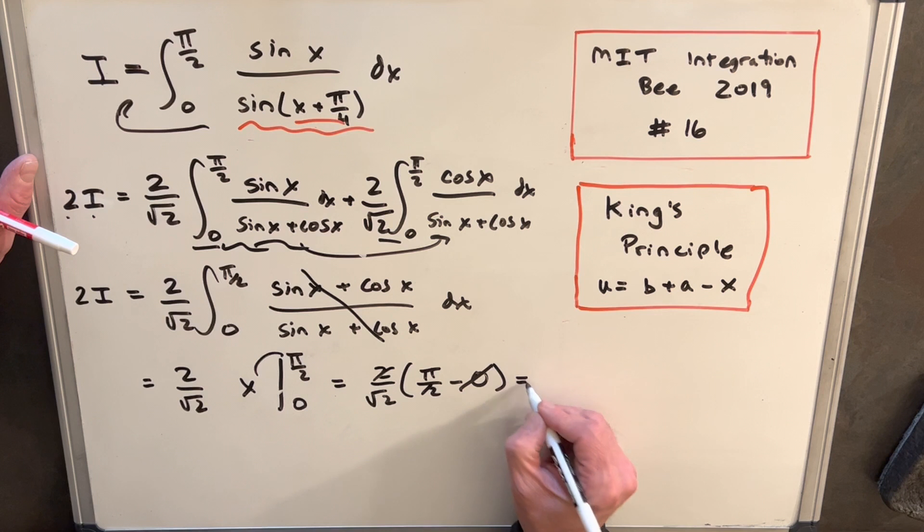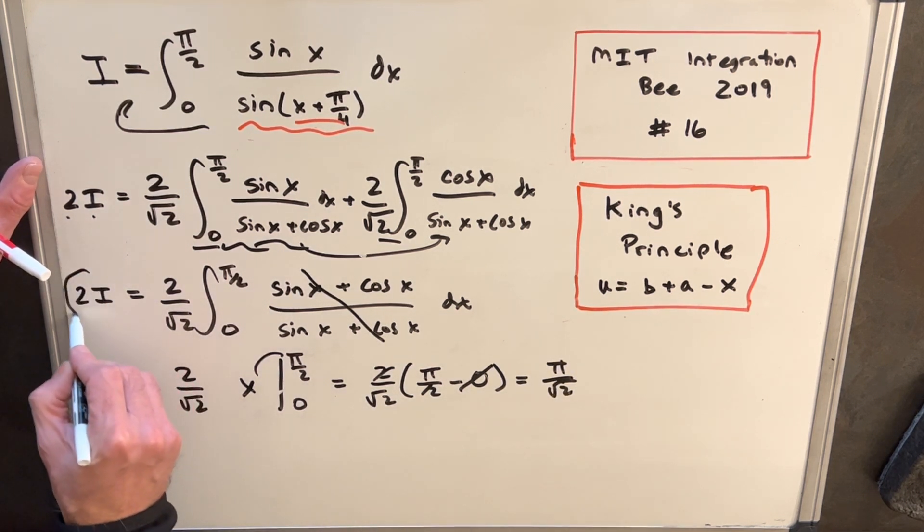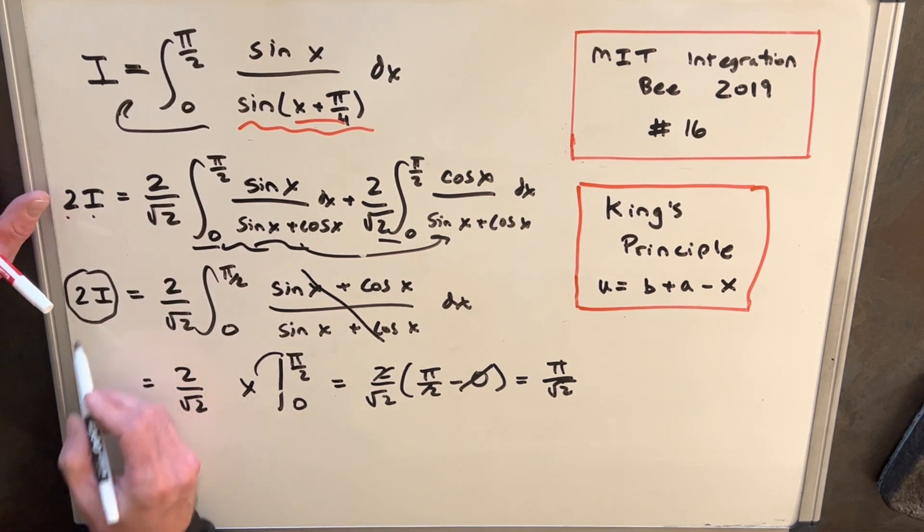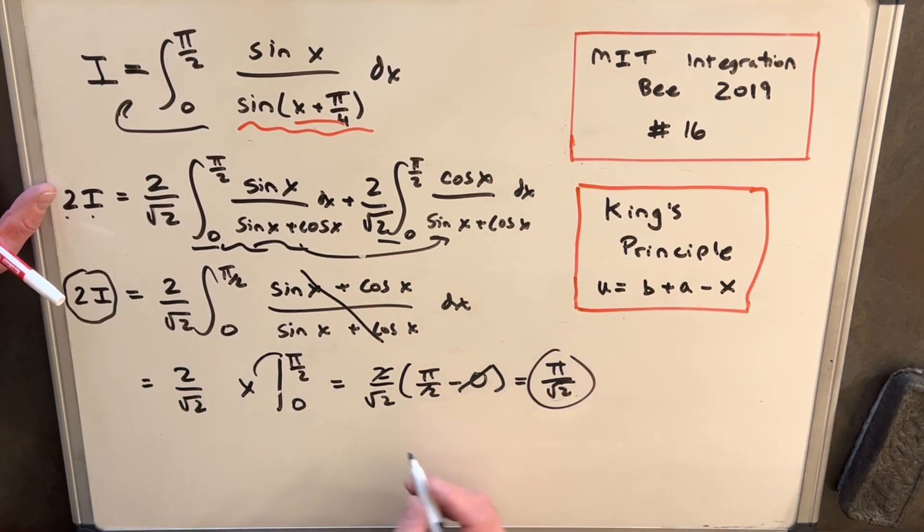And so zero is just zero. Two's cancel. And we're left with pi over square root of 2. But we have to remember that we've doubled up our integral, so we have to divide by 2. And so dividing this piece by 2, for our final answer, we're going to have pi over 2 square root of 2.